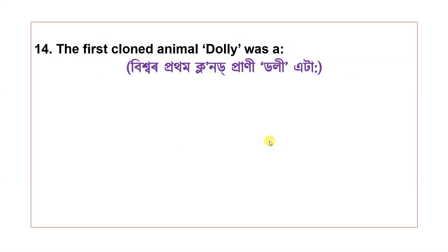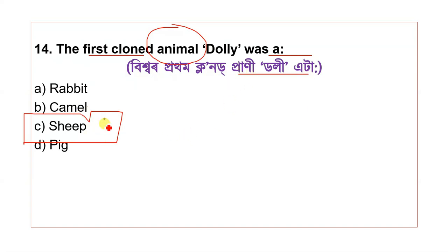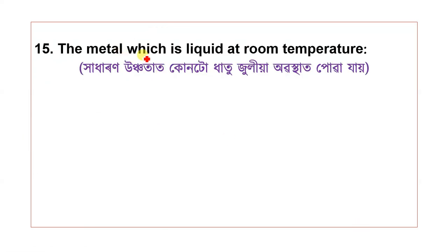Question 14: The first cloned animal Dolly was cloned. Question 15: The metal which is liquid at room temperature.